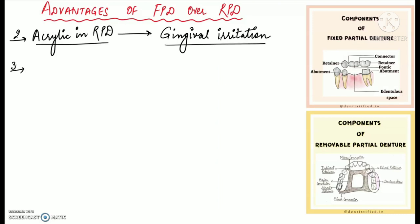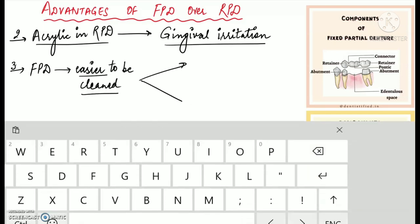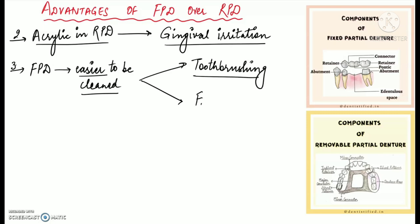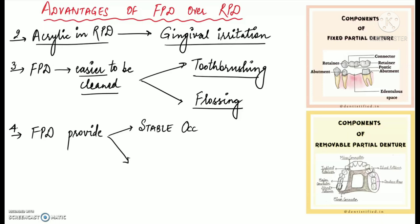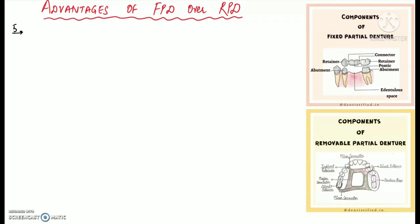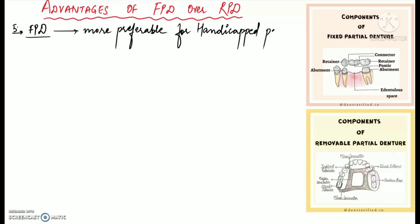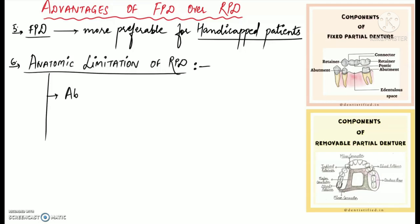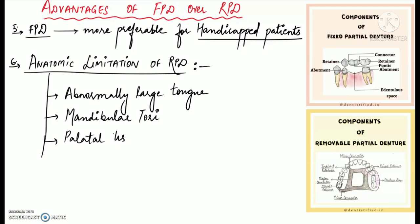FPD is also easier to clean by tooth brushing and proper flossing under the pontics. FPD can provide more stable occlusion than a removable partial denture, and it can also provide splinting action and space maintenance better than an RPD. Another advantage is that FPD is generally more preferable for disabled or handicapped patients because it can be maintained more easily. There are also anatomic limitations for removable partial dentures, including abnormally large tongue, mandibular tori, palatal tissue coverage in the case of maxillary removable partial dentures, or any muscular disorder.